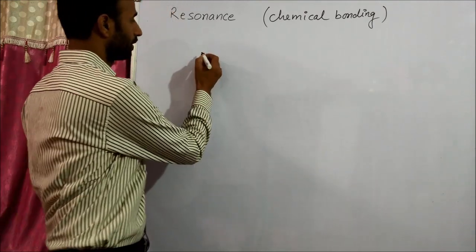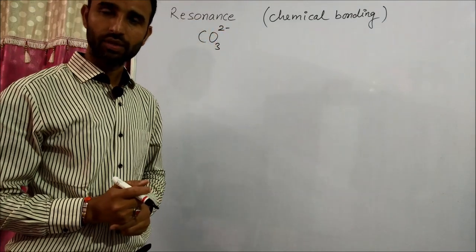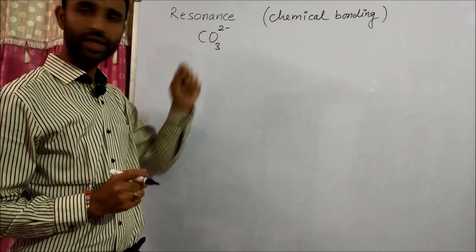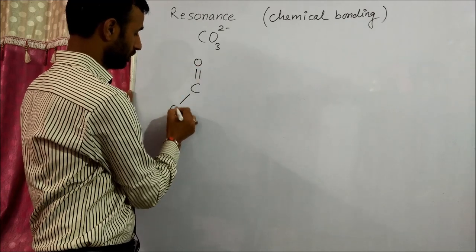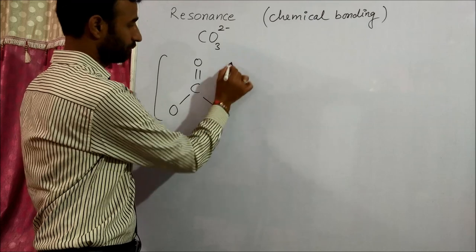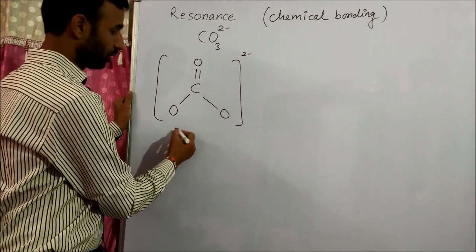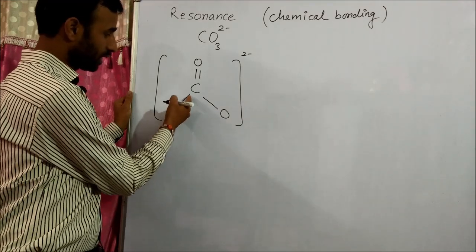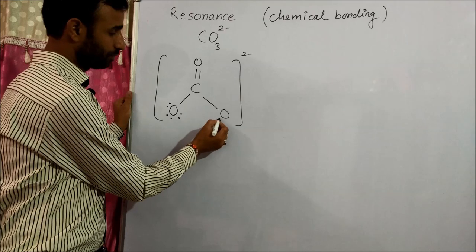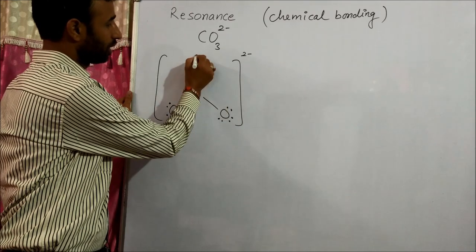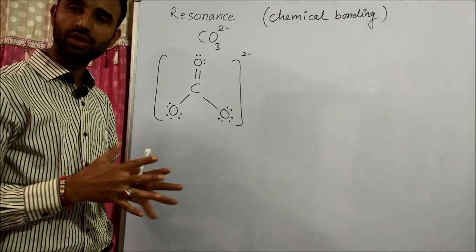Take an example. Let's suppose we have the carbonate ion, CO₃²⁻. It has two negative charges. When we draw the structure, according to Lewis, this is the Lewis structure of carbonate. As there is a single bond, each carbon should have an octet of electrons. So we have all 8 electrons distributed — this carbonate ion is the Lewis dot structure.